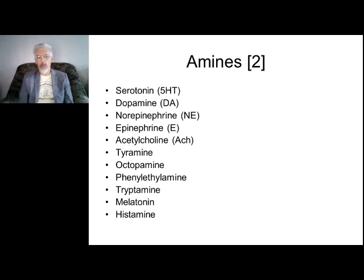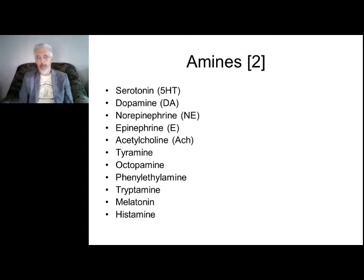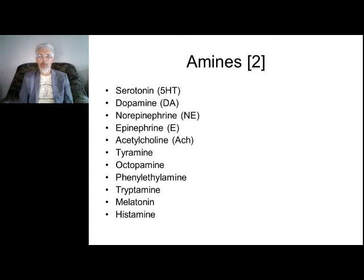Classification of neurotransmitters by chemical structure. First: amines — very important substances in mental diseases. The main amines with high roles in mental disorders are serotonin, dopamine, norepinephrine, epinephrine, and acetylcholine. Serotonin and norepinephrine are responsible for anxiety disorders. Dopamine is responsible for reward, dependence, and psychosis like delusions and hallucinations. These are the main neurotransmitters of interest to psychiatrists.